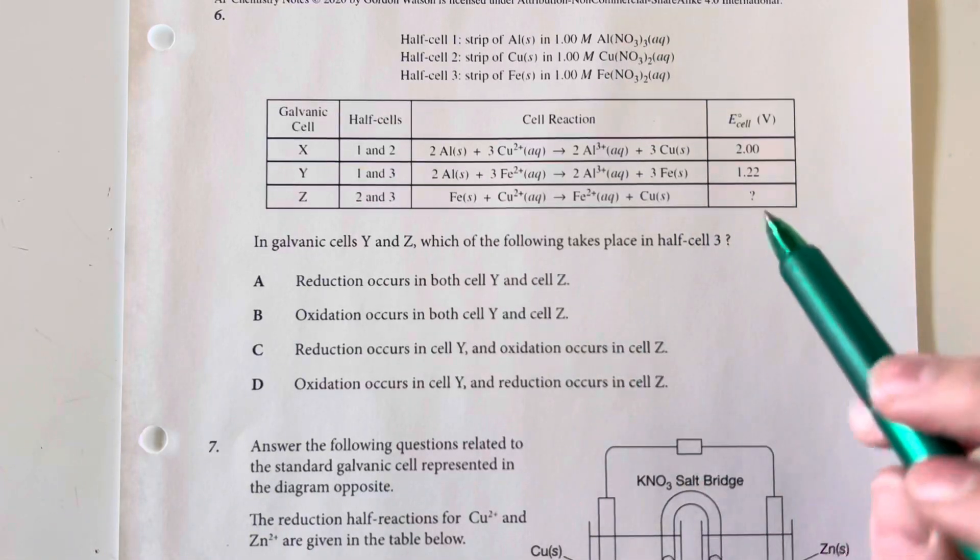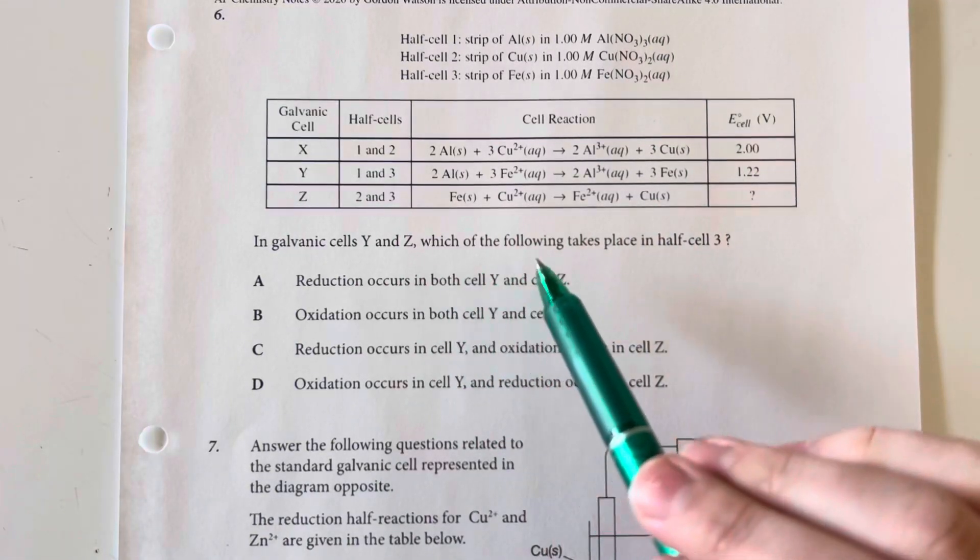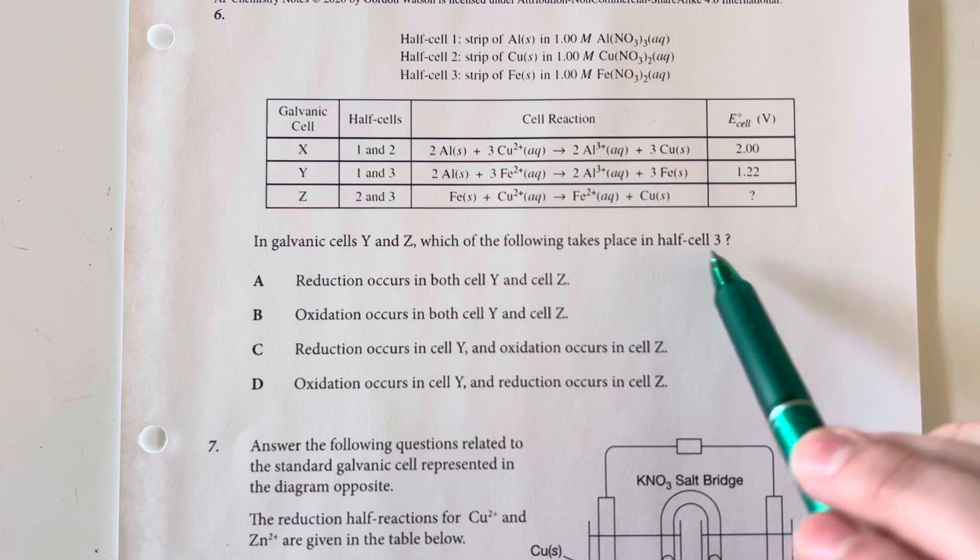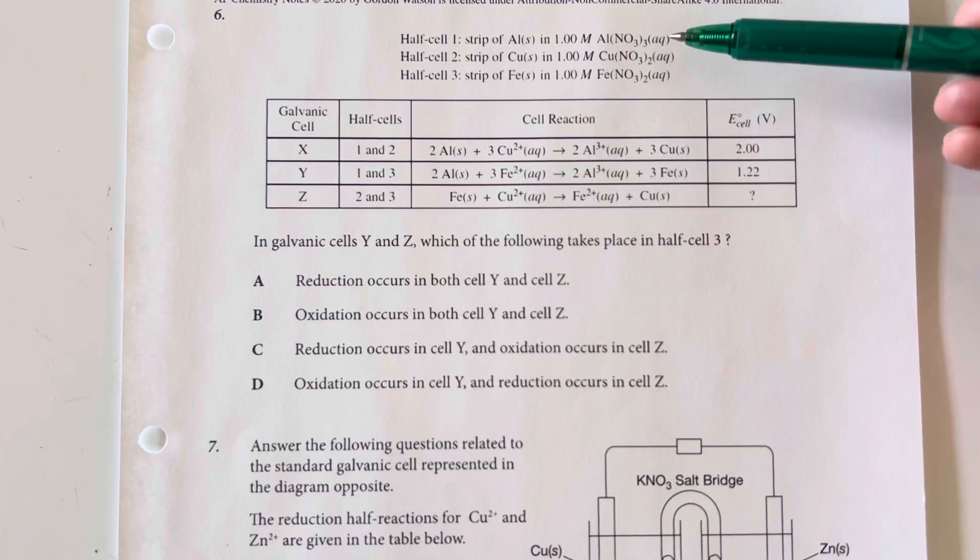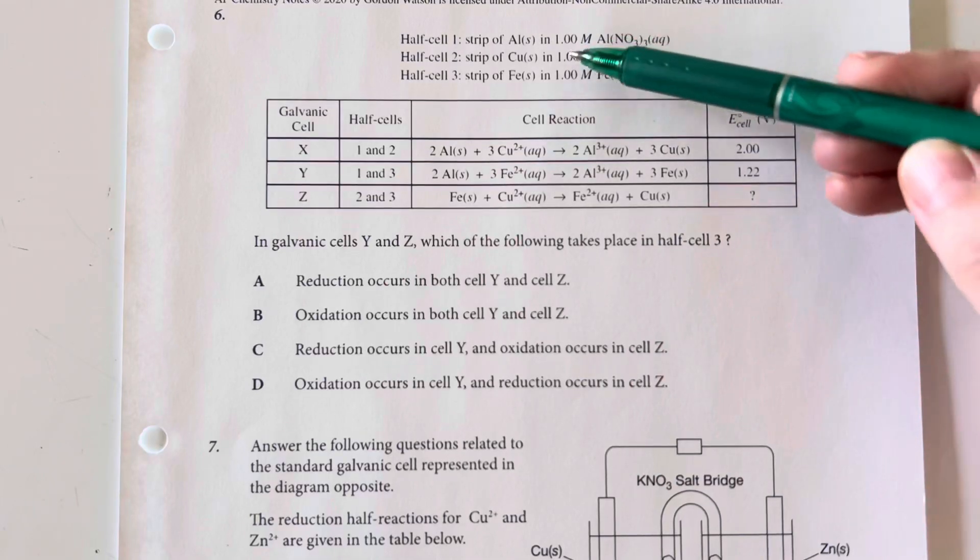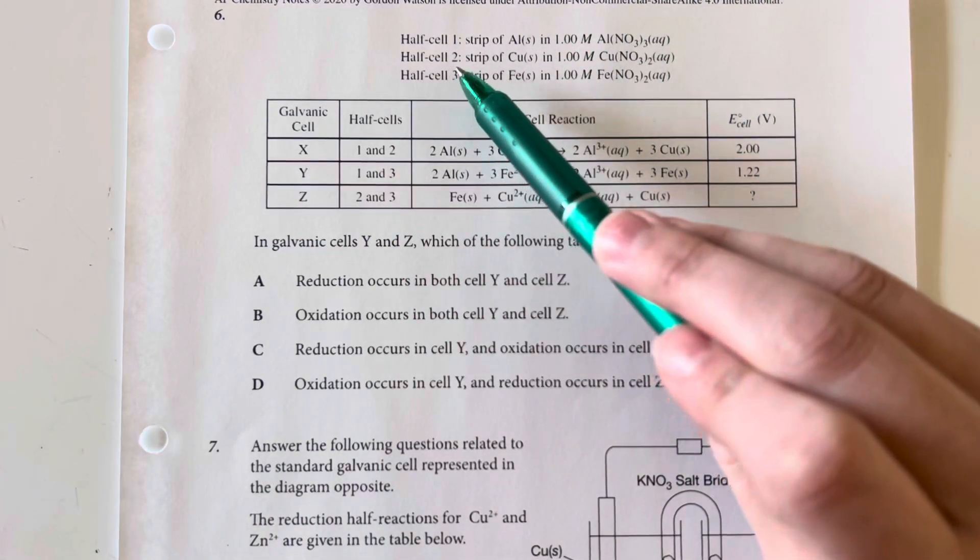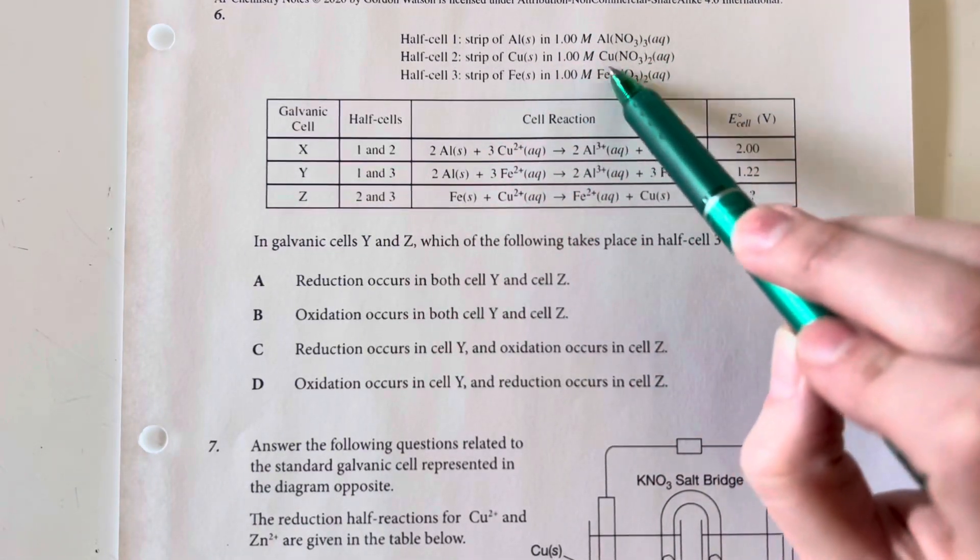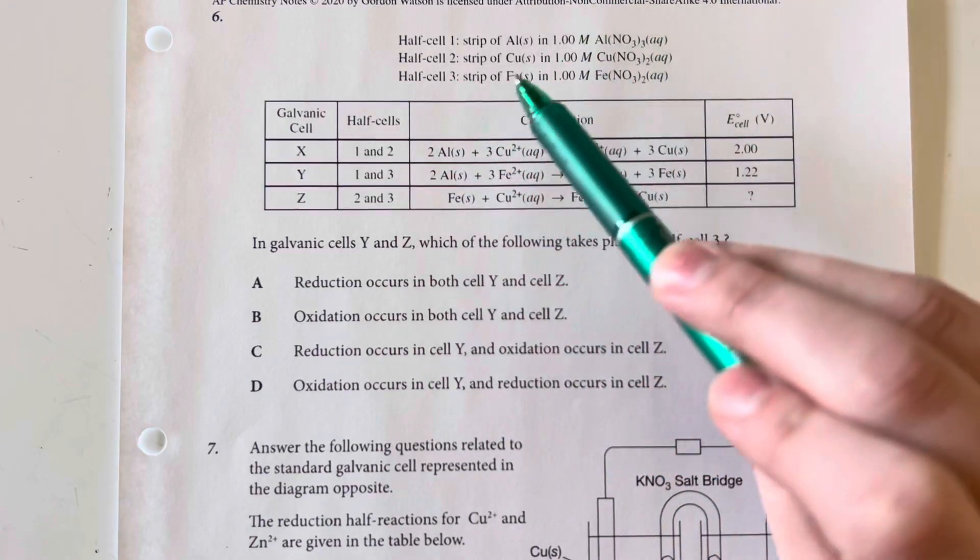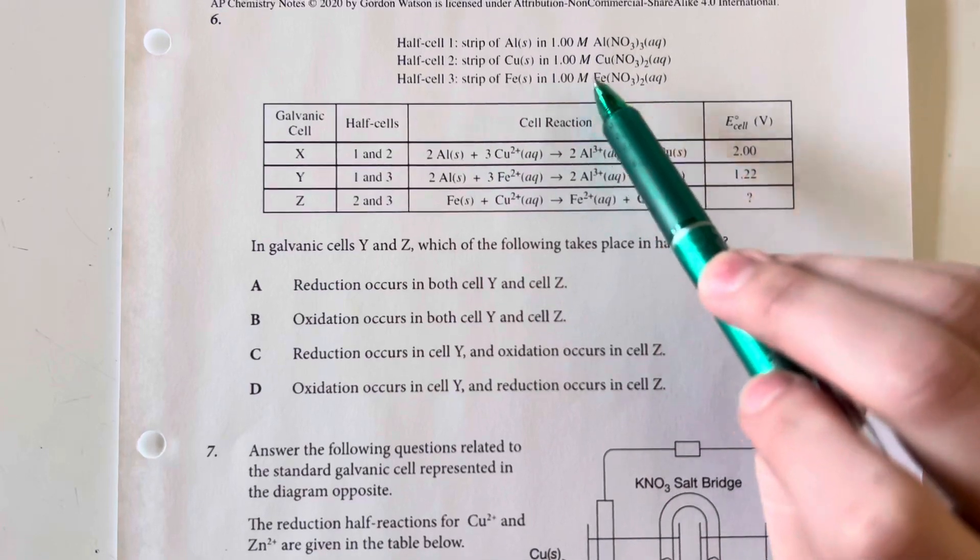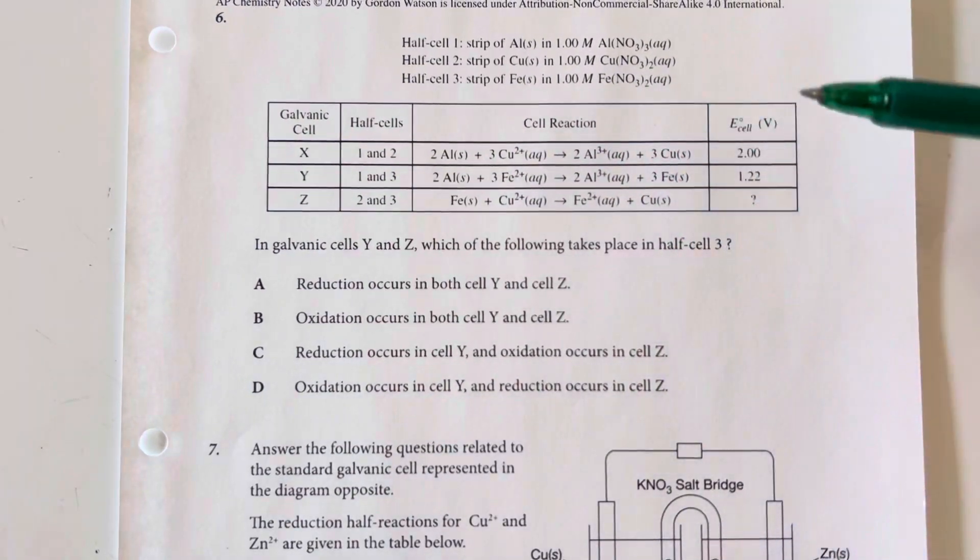In galvanic cells Y and Z, which of the following takes place in half cell 3? In half cell 1, I have a strip of aluminum in 1 M aluminum nitrate. In half cell 2, a strip of copper in 1 M copper(II) nitrate. In half cell 3, a strip of iron in 1 M iron(II) nitrate.